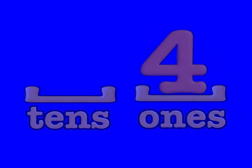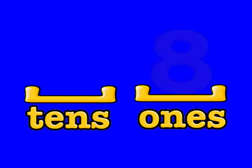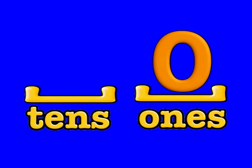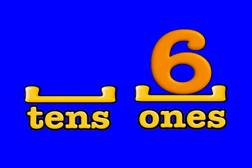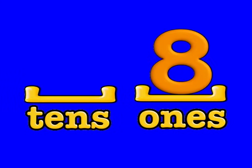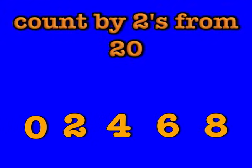When you're counting by 2s, the ones place always follows a pattern: 0, 2, 4, 6, 8, and then back to 0. That pattern repeats over and over again.